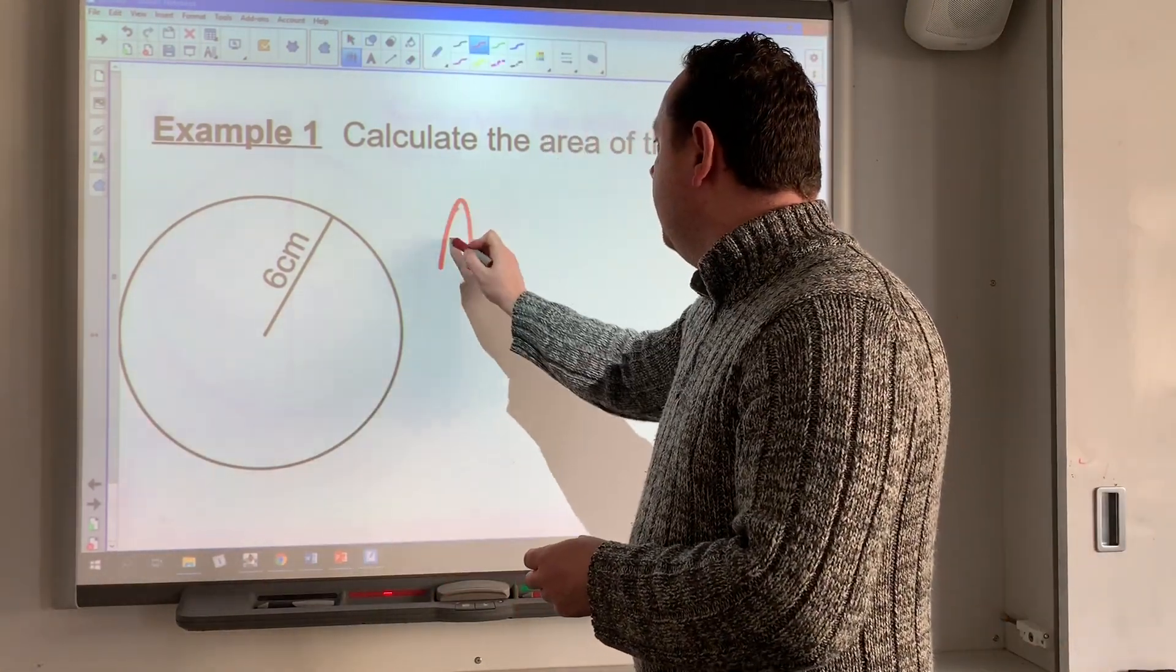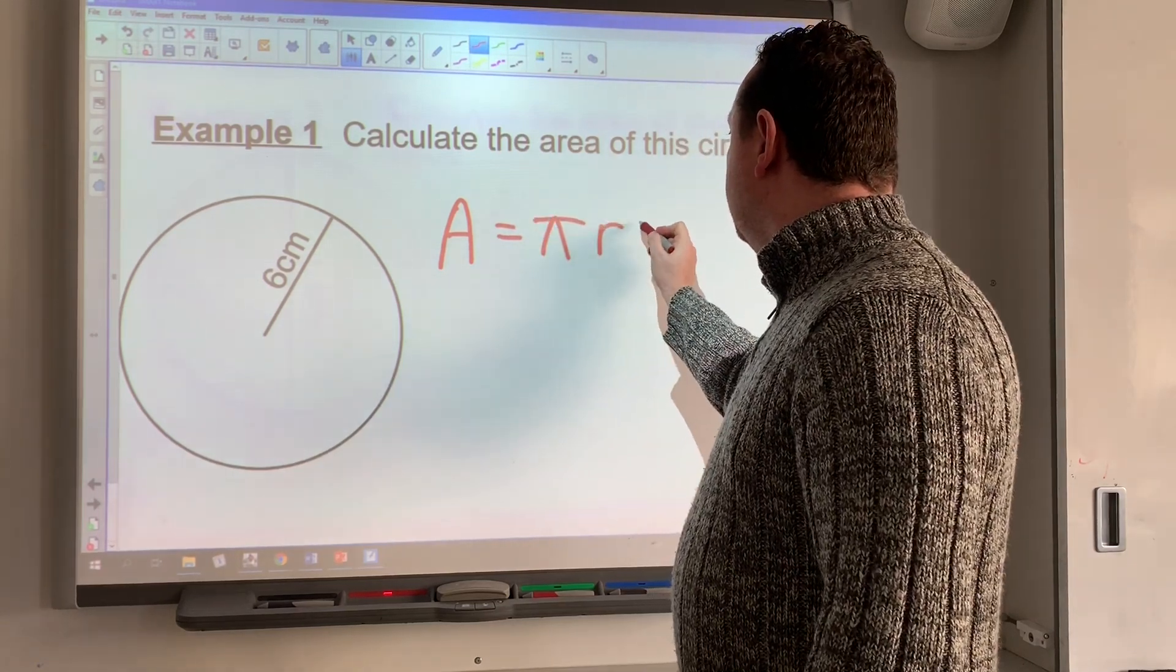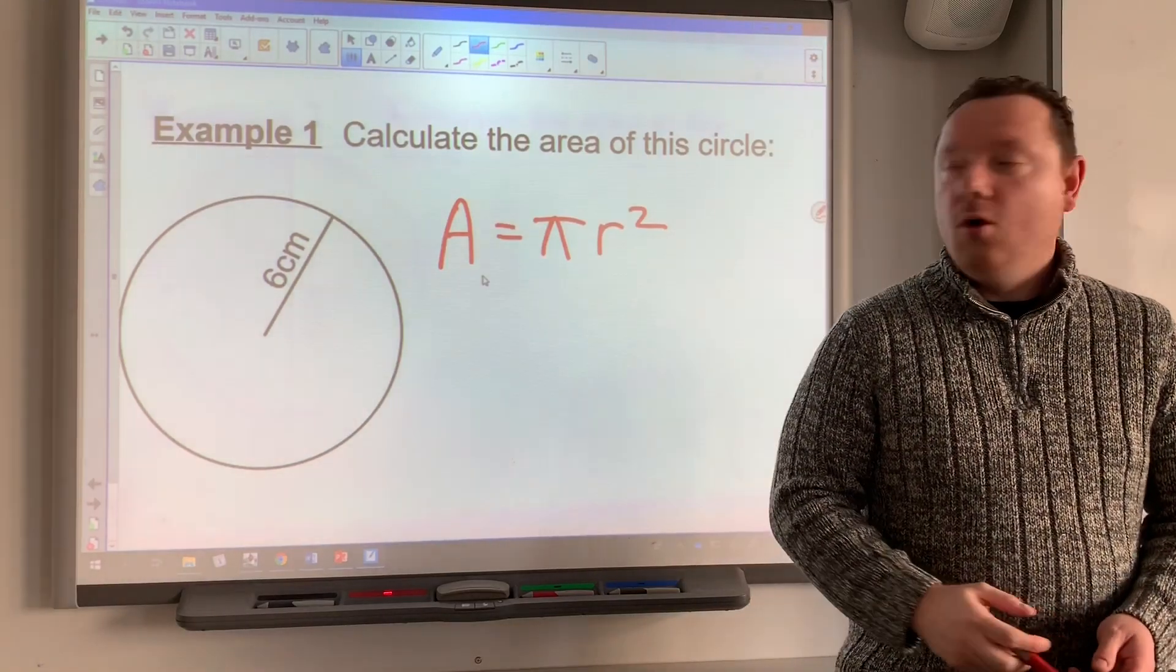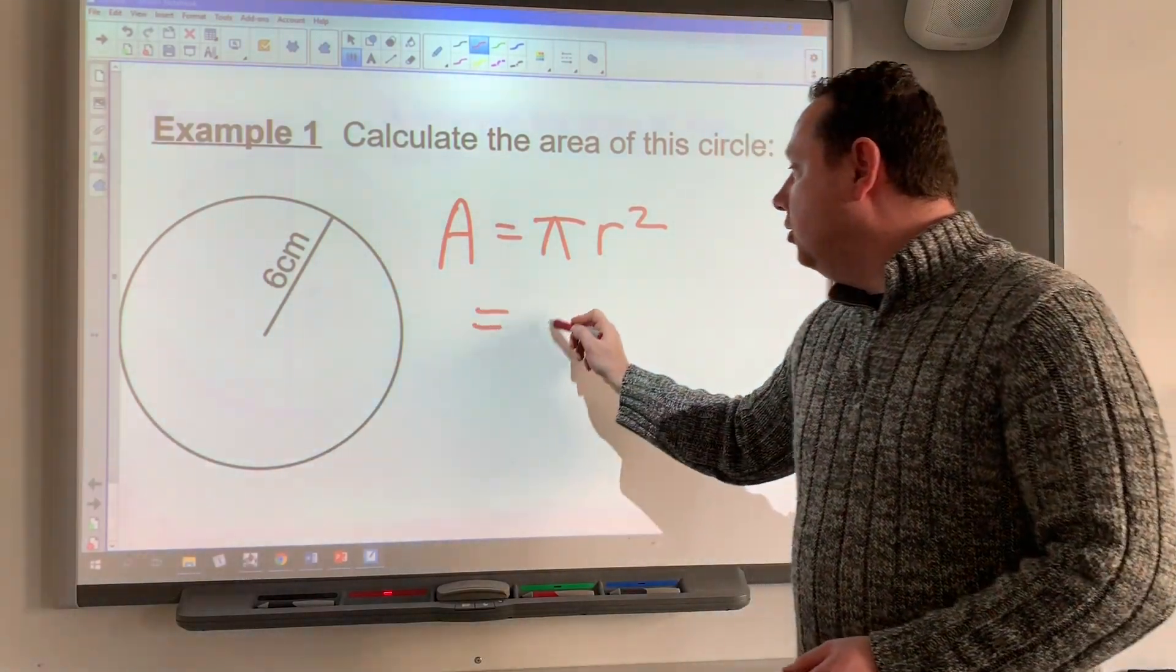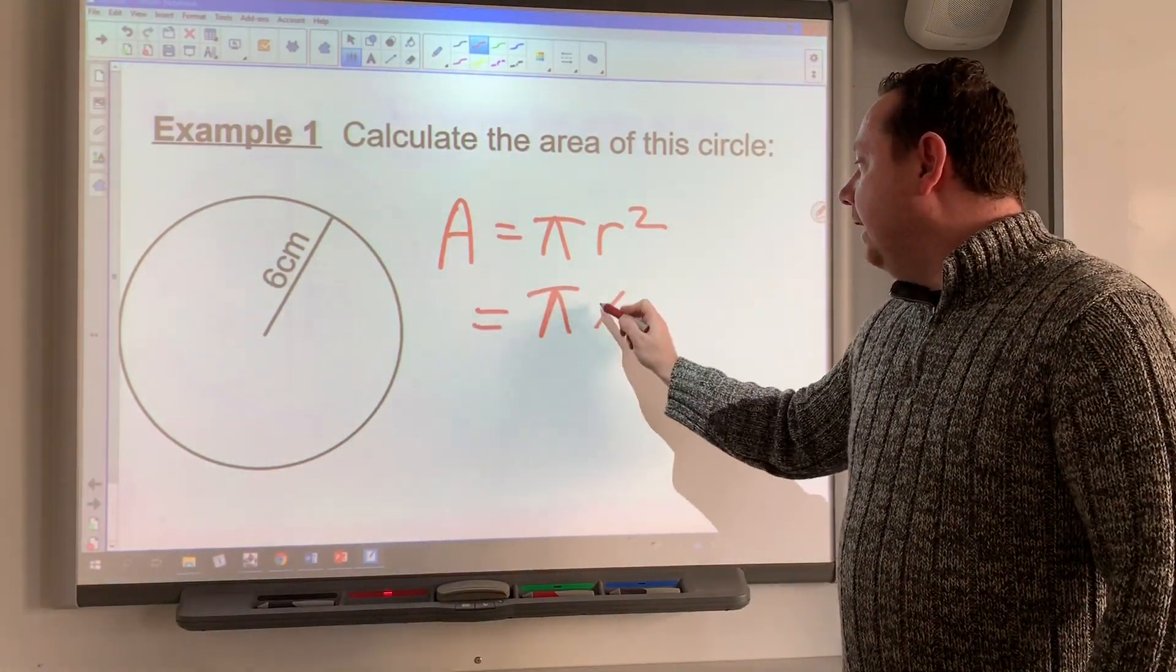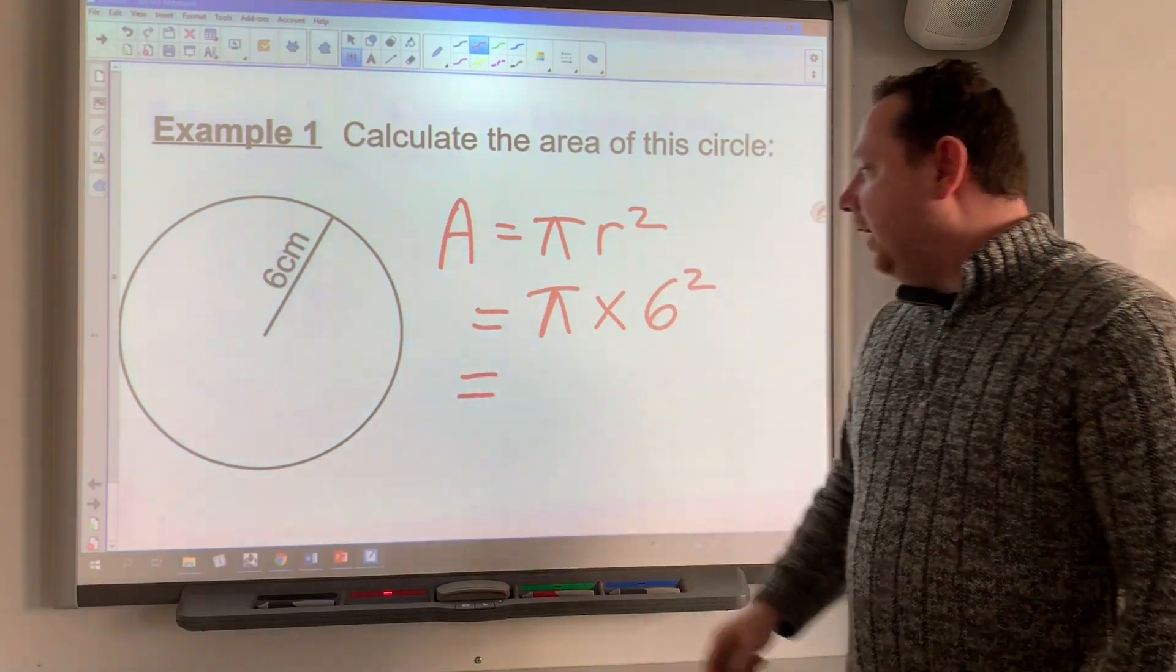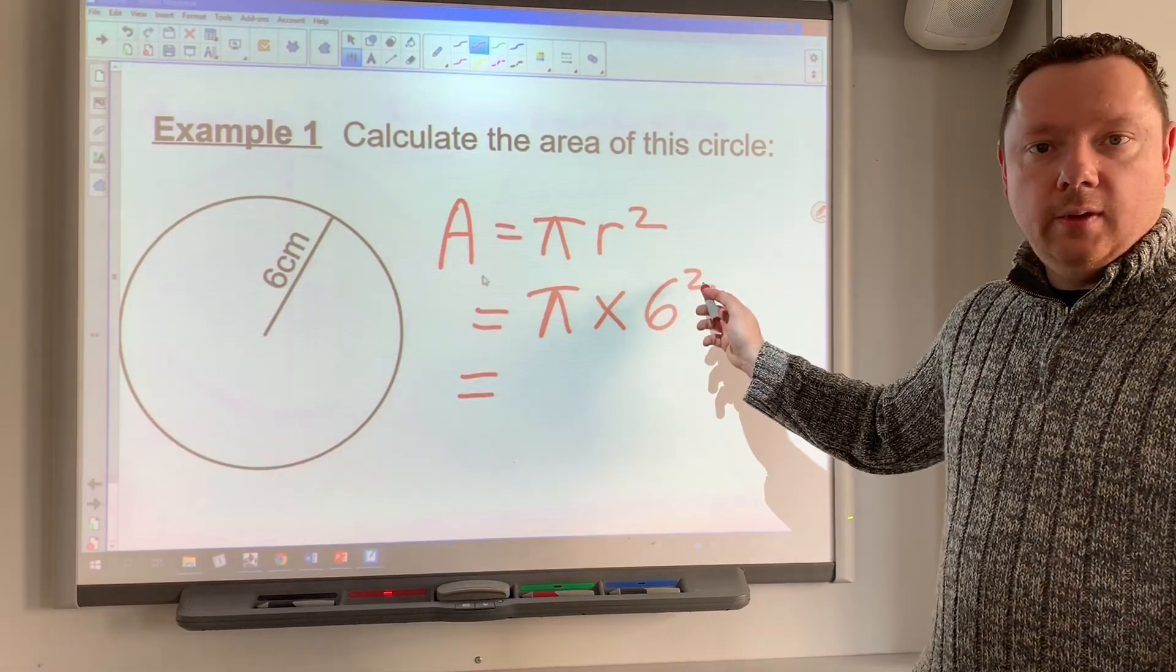A = πr². We then substitute, so we'll put π × 6². You can put all that straight into the calculator. I'll show you how to do squared in a minute.